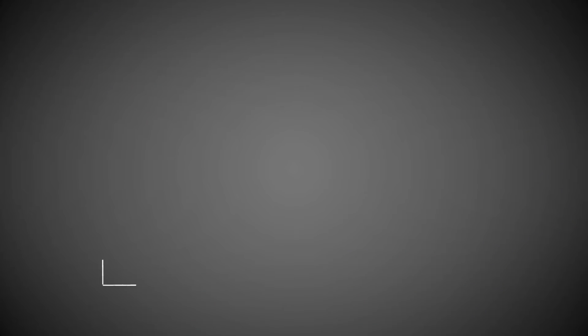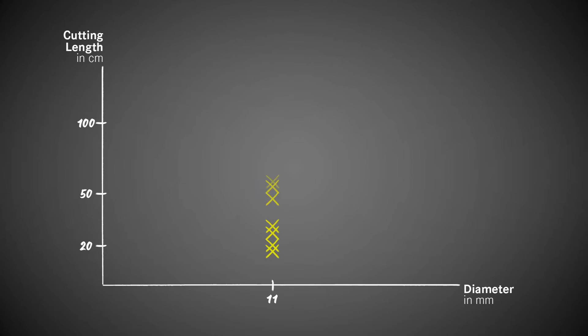What you can see here is quite interesting. All of these ropes are marketed as 11 millimeter ropes, and yet the cutting values vary greatly — we can see almost a 500% difference between the lowest value and the highest value. That only underlines our earlier statement that diameter is not really a good parameter to judge the cut resistance of a rope. So are there any other values that might give you a hint?